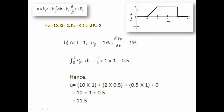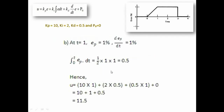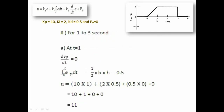For t = 1, the error is 1 percent and the derivative is 1 percent per second as already calculated. Now we calculate the integration: at t = 1, the area under the curve is the area of a triangle. Using those triangle values, the area is 0.5, so the integration of error at t = 1 is 0.5. Putting these values into the u equation gives u = 11.5.